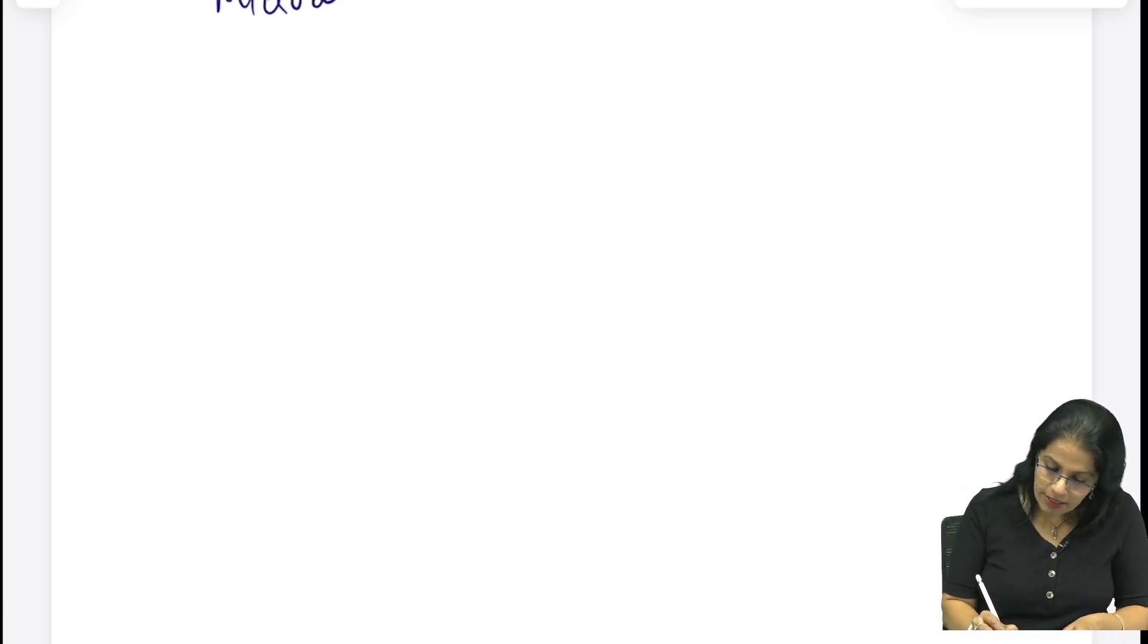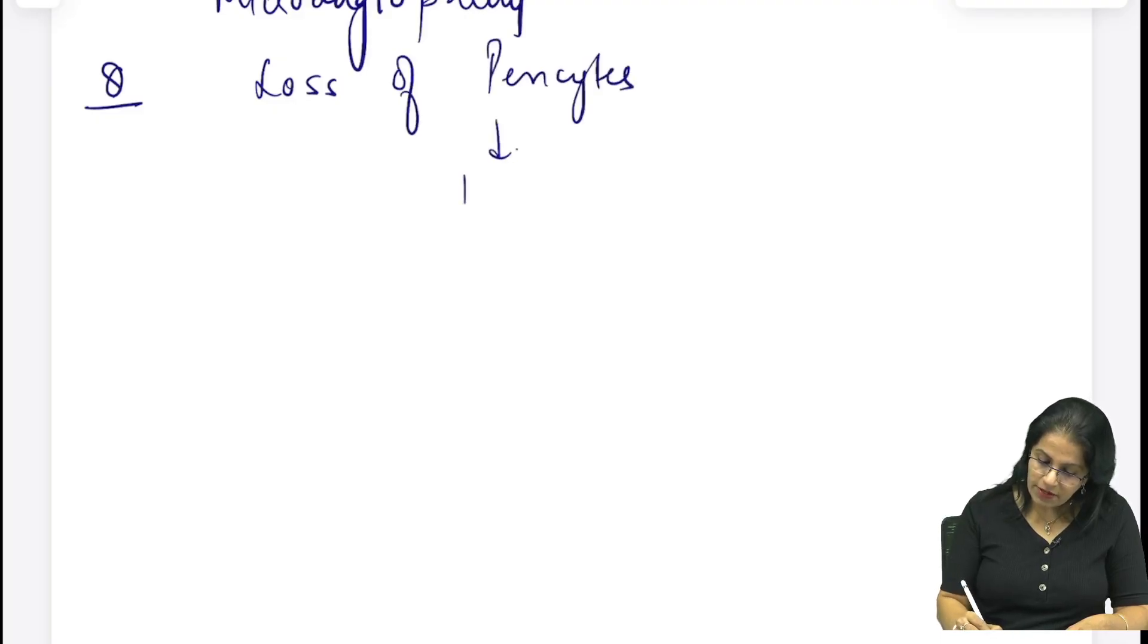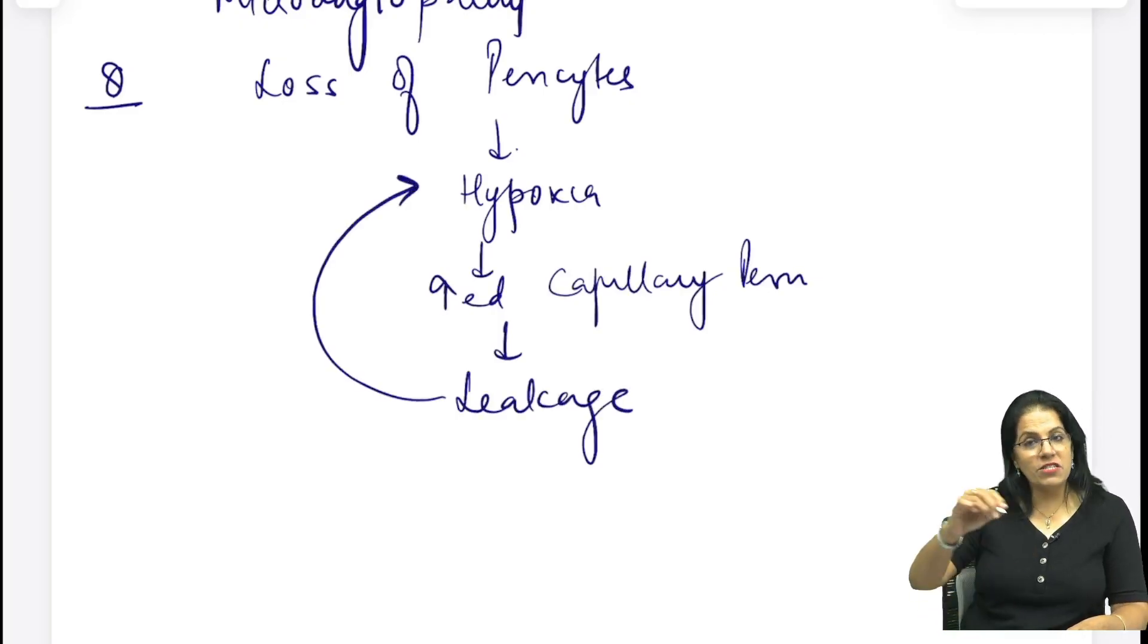Jab microangiopathy hogi, microangiopathy me sabse important cheez diabetes me aapko kya yaad rakhna hai? Ye exam me puchha jata hai, kyu lagta hai? Loss of pericytes. Capillaries jo hai kya structure hota hai? Endothelial cell and pericytes. So it is mainly loss of pericytes. Ab jab is tarah ki cheeze hogi to kya hoga? Microangiopathy ki wajah se hypoxia ho raha hai. Jab hypoxia hoga, uske baad uske reaction me hota hai increased capillary permeability. Jab permeability badhti hai to phir leakage hota hai. Jab bhi leakage hoga, isse aur hypoxia badhega. So there is a vicious circle.